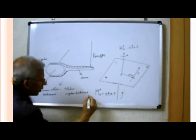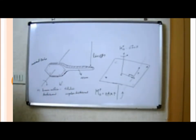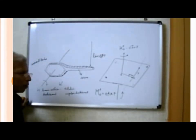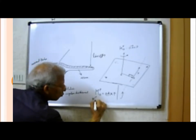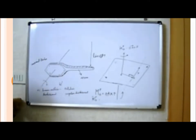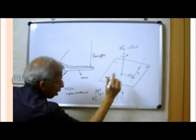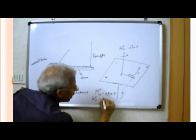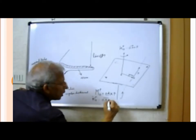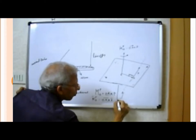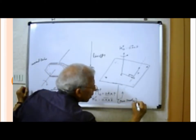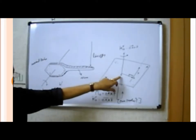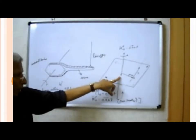Now let us talk about the vector formula. The moment of a force about O is equal to the position vector OA⃗ cross F⃗. This is a cross product. OA here is the position vector — OA is the moment center, and A is a point on the line of action of the force.